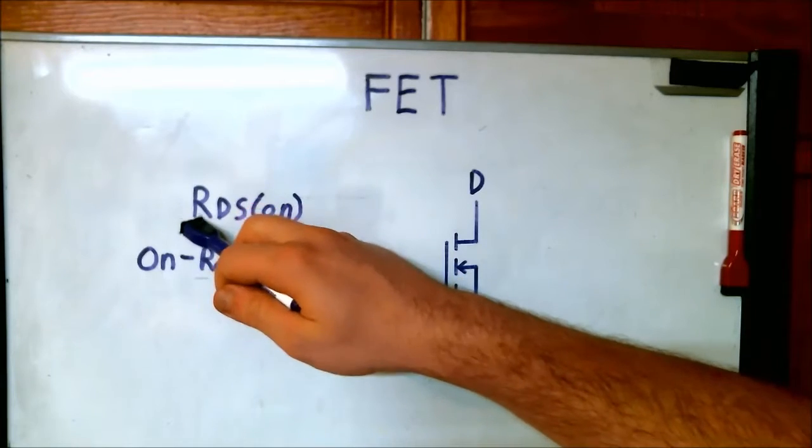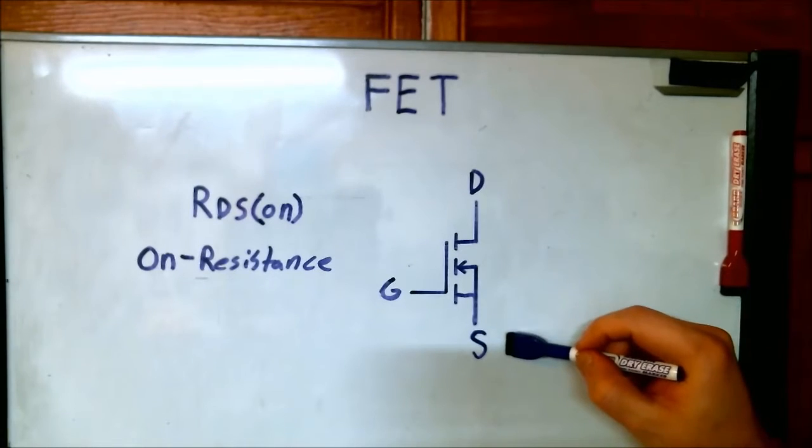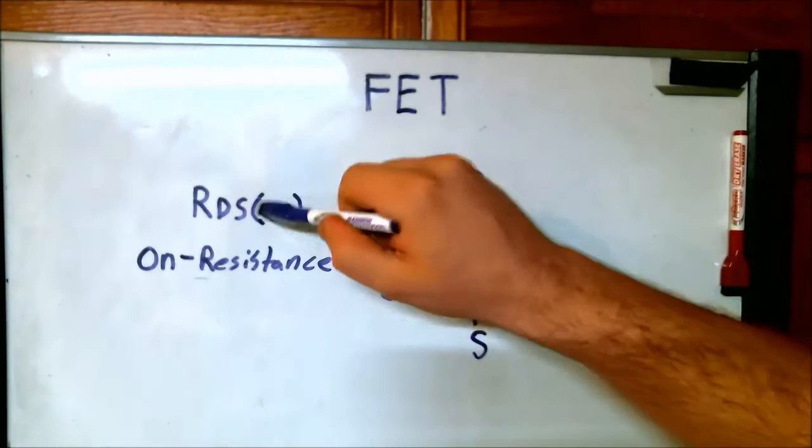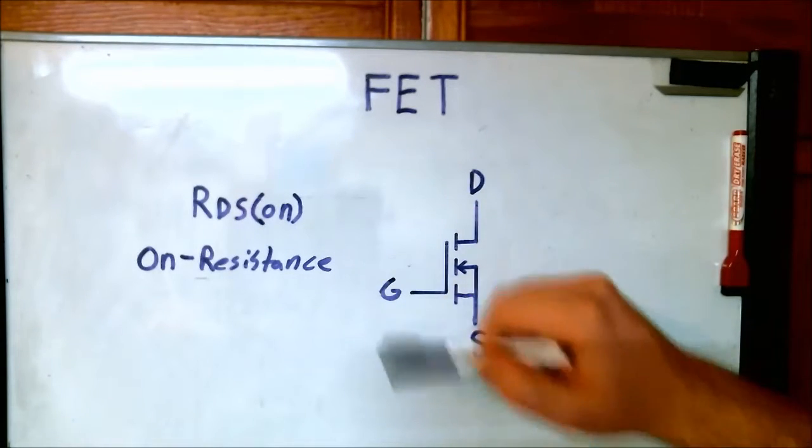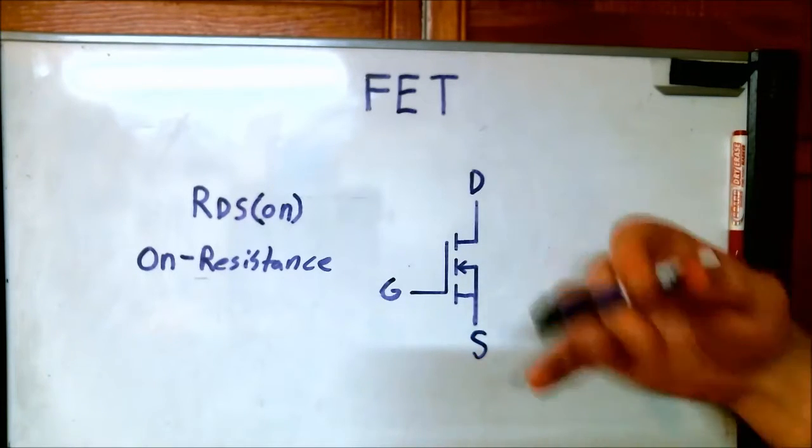That means the resistance between the drain and the source. This is the drain and this is the source. ON indicates that the gate is configured for the ON setting, so it has a certain amount of voltage on it.